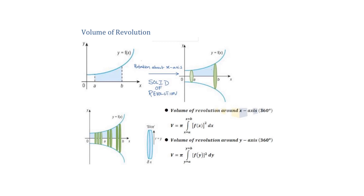Let's begin with the concept of volume of revolution. When any shaded part is revolved around the x-axis 360 degrees, a solid of revolution is formed. If we divide that solid into smaller parts, each part looks like a cylinder with a certain radius and width delta x.